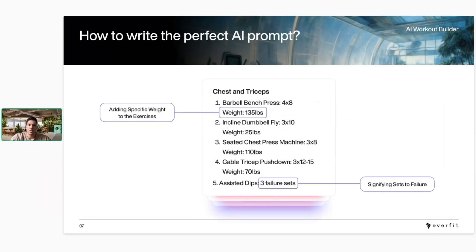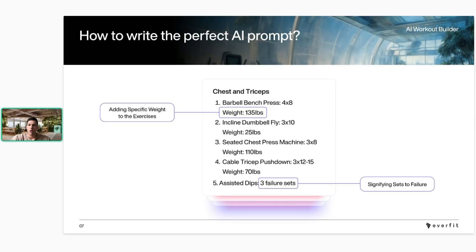If you're specifying certain weight, you can add it — for example, 'barbell bench press 4x8, 135 pounds' — and the AI will pick that up. It's important to put 'pounds' or 'kg' so it knows that's the actual weight. If you want to specify certain types of sets like failure sets, drop sets, or warm-up sets, you can type that out and the AI will automatically input it into the new workout it generates.